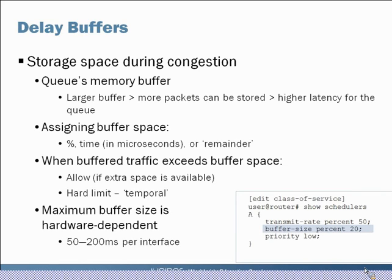For assigning buffer space you can use a percentage of the available amount, specify a time in microseconds, or use the 'remainder' parameter. In the example in the bottom right corner, we've added the buffer size parameter — in this case 20%. When you exceed your buffer space, by default it expands and borrows from other queues, or you can specify a hard limit using the 'temporal' command, after which you start to drop traffic immediately.